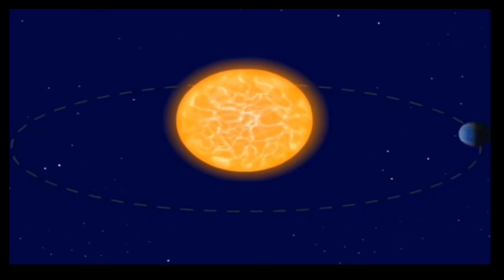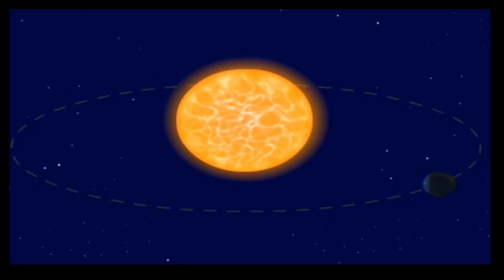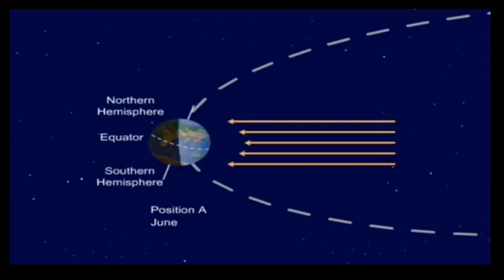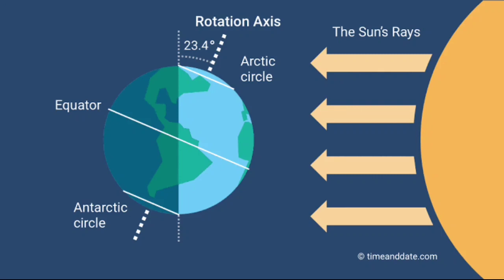As you can see in the video, the earth revolves around the Sun and does not remain static in one place. When the earth is in position A, the north pole is facing towards the Sun, the northern hemisphere receives direct rays, and the southern hemisphere receives indirect rays. The northern hemisphere will have longer days and the southern hemisphere shorter days — it will be summer in the north and winter in the south.